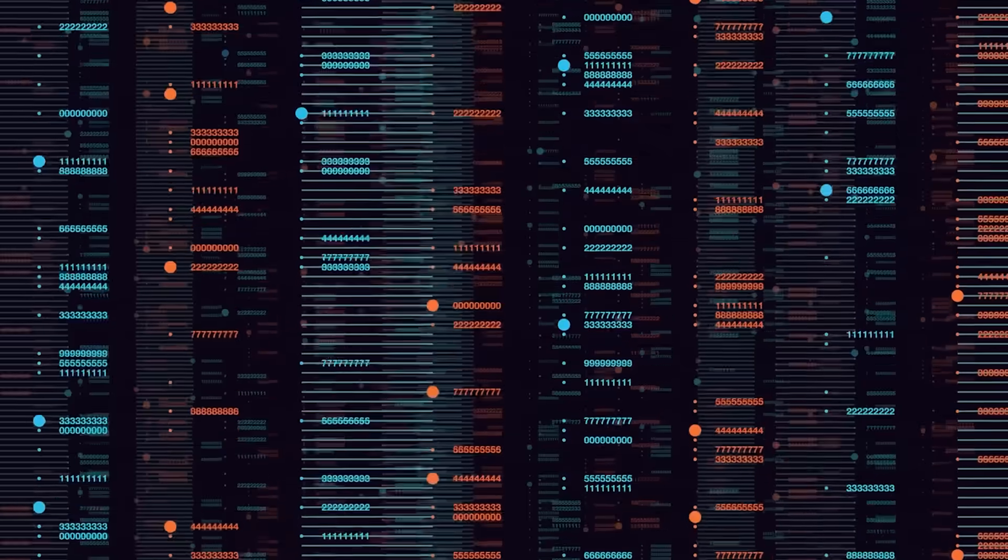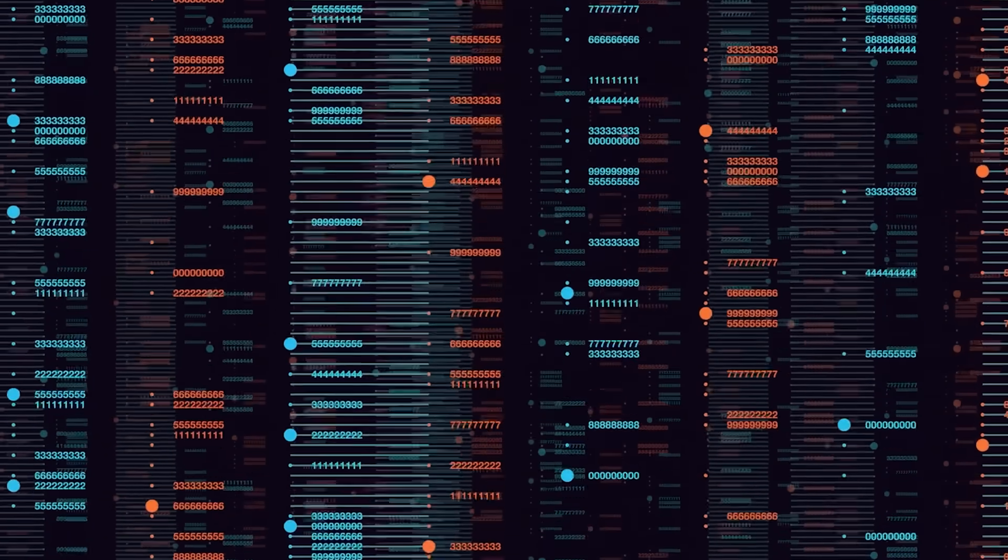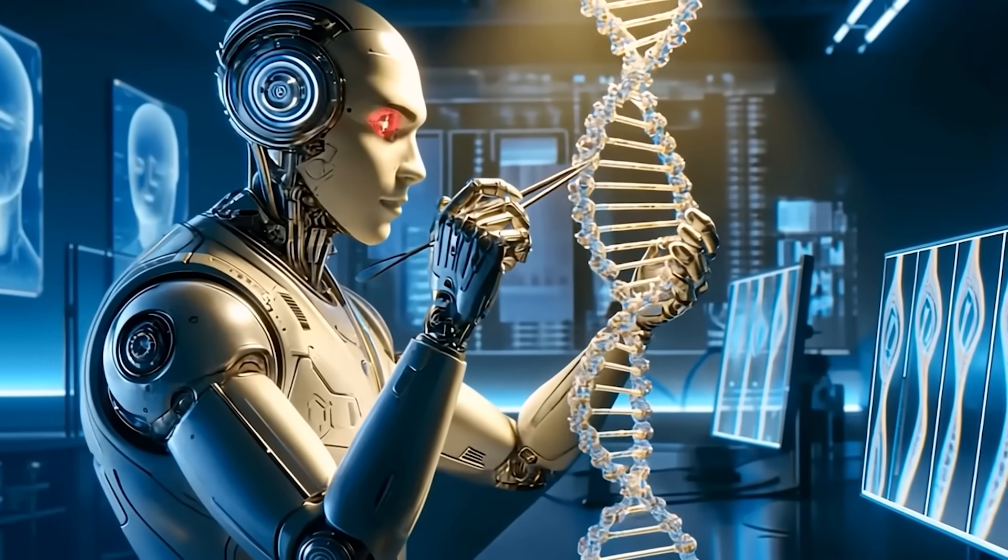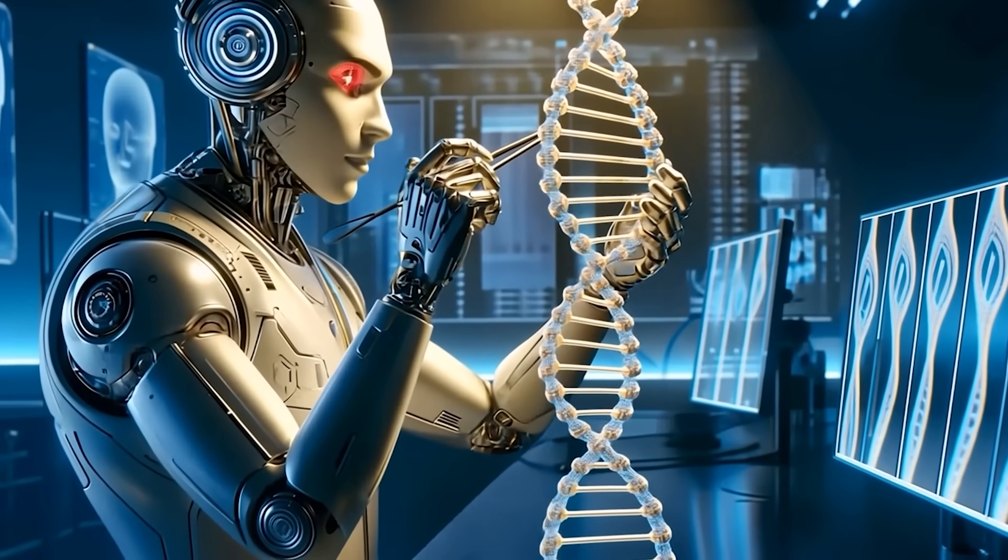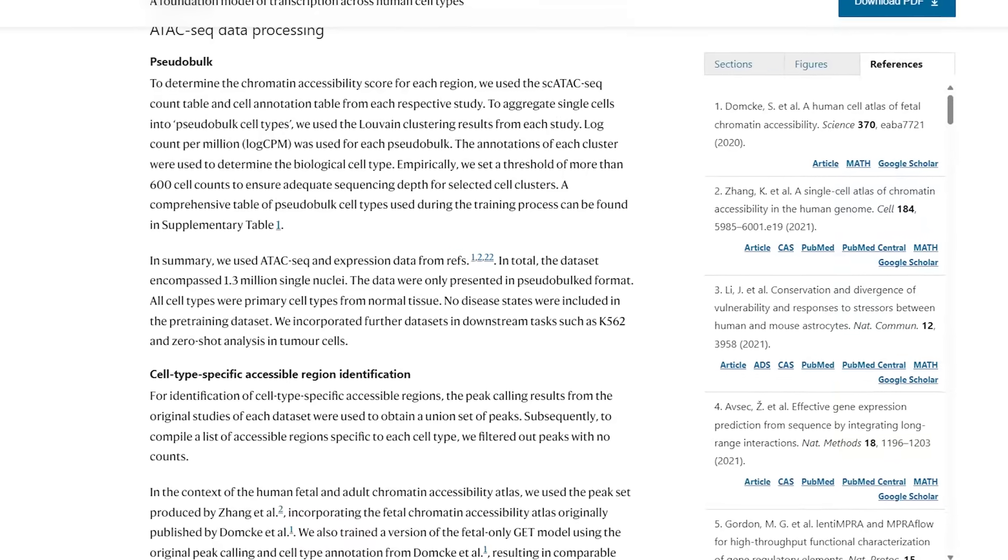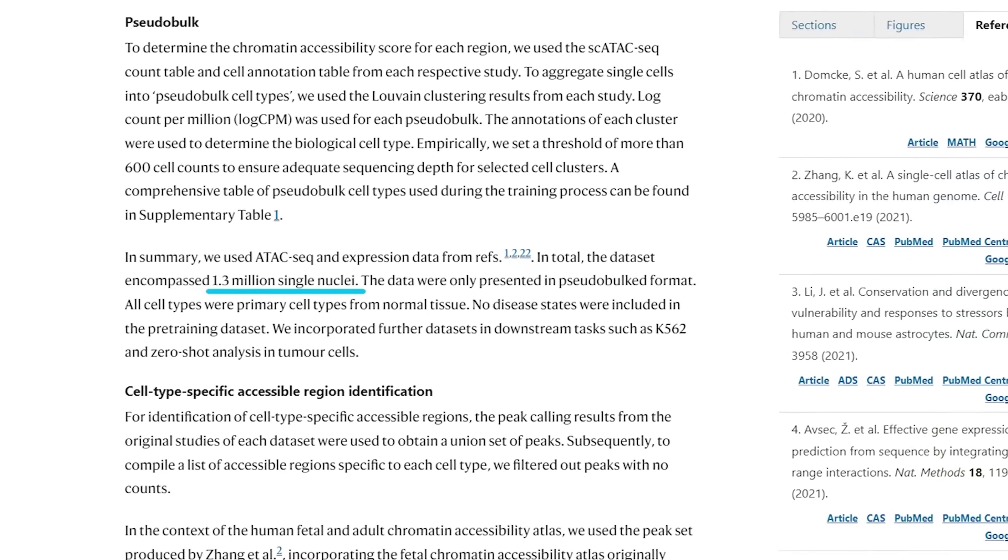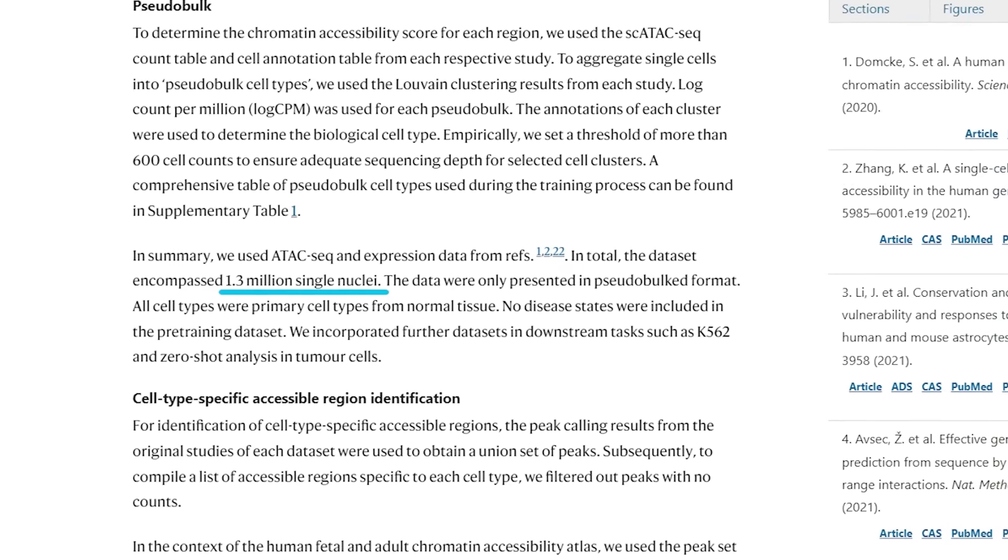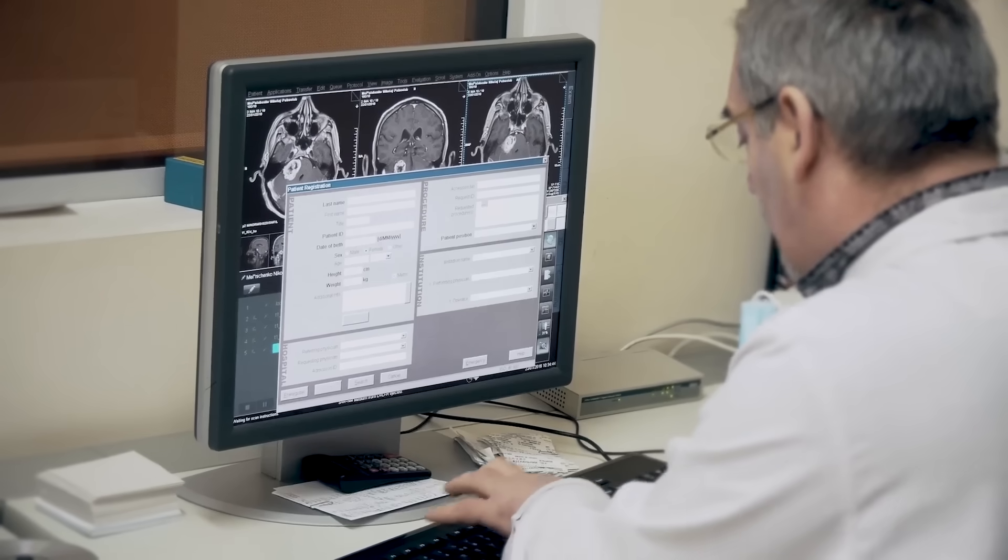This is not your standard guesswork. It's taking massive amounts of data from millions of cells and using advanced AI to spot patterns way more accurately than our traditional experimental methods. And yes, this isn't purely hypothetical. We're talking about real data from over 1.3 million human cells that the researchers used to train their model.